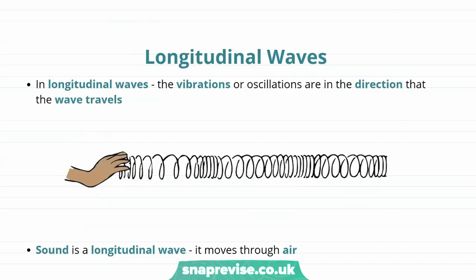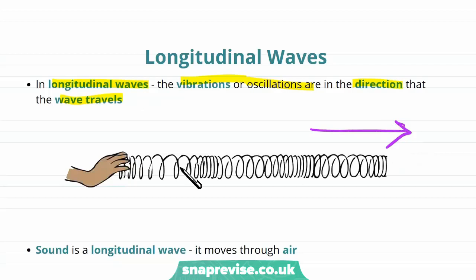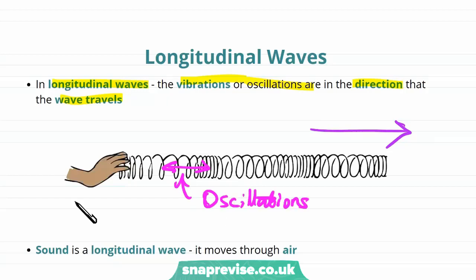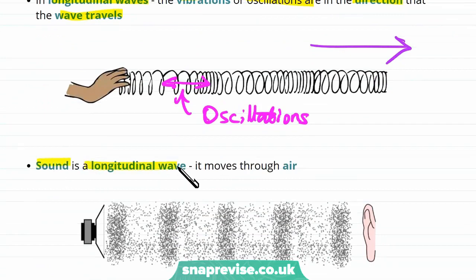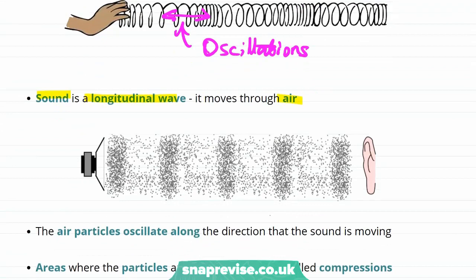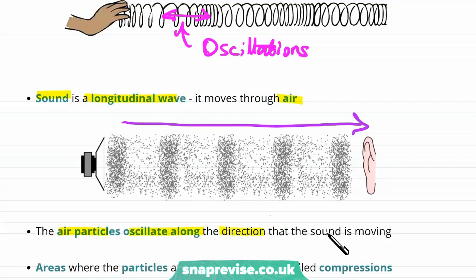Now let's look at some examples of longitudinal waves. Remember that in longitudinal waves, the vibrations or oscillations are in the direction that the wave is traveling in — the wave travels in this direction and the oscillations are along that direction. We've already come across another example of a longitudinal wave: sound is a longitudinal wave. It moves through air. So let's imagine a sound wave moving from a speaker towards our ear — the air particles oscillate along the direction that the sound is moving.